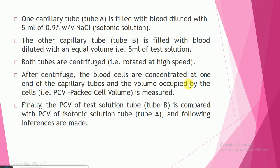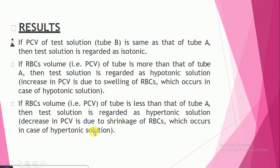The volume occupied by the cells — the packed cell volume, or PCV — is measured. Finally, the PCV of the test solution in tube B is compared with the PCV of the isotonic solution in tube A to determine the results.